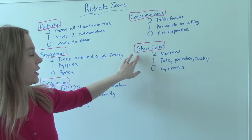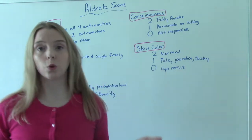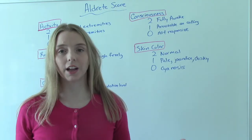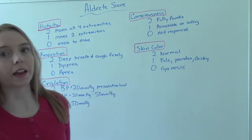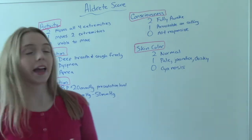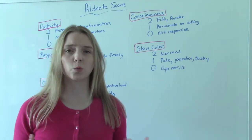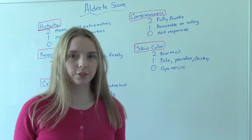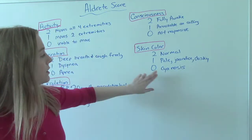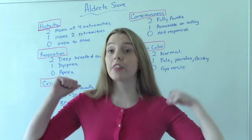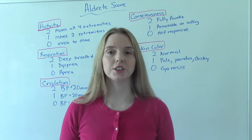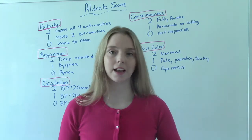And then finally skin color. So a 2 is their normal skin color. So whatever their skin color is, it's normal for them. They get a 2. 1 would be any variation. So pale, jaundice, dusky, ruddy. Anything that's a little bit off is a 1. And then of course the worst is 0. And that's cyanotic. So that is the Aldrete score. So this is how we determine if the patient is ready to be discharged from the PACU.